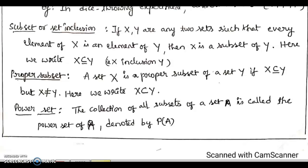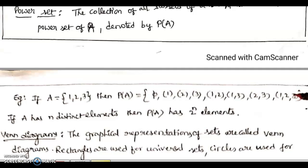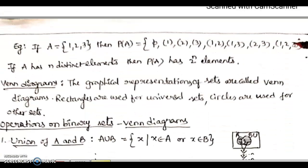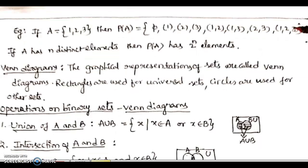We call it the proper subset only when X is a subset along with the condition that X is not equal to Y. Next, coming to the power set. If A is any given set, its power set is denoted by P(A). It is the set of all possible subsets of the set A. For example, if the set A has three elements 1, 2, 3, then the power set P(A) will have 2 to the power n elements, where n equals 3. So there will be 2³ = 8 elements. The elements of the power set are: the empty set, {1}, {2}, {3}, {1,2}, {1,3}, {2,3}, and {1,2,3}. These are the eight subsets which form the power set of the given set A.